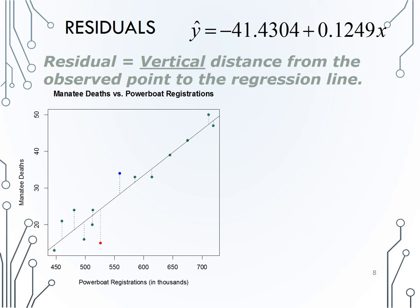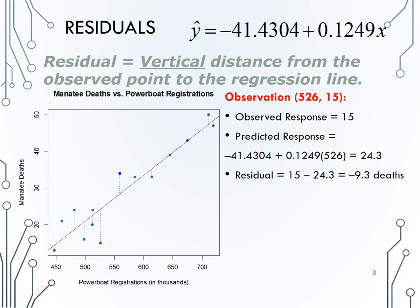Let's look at the dot indicated in red. The observed value of that dot is 526, 15, or in a year with 526,000 powerboat registrations, there were 15 manatee deaths by powerboat. The observed response value, or the observed y value, is 15.